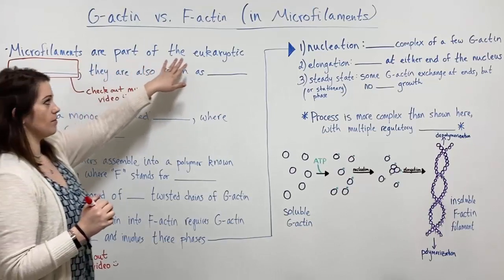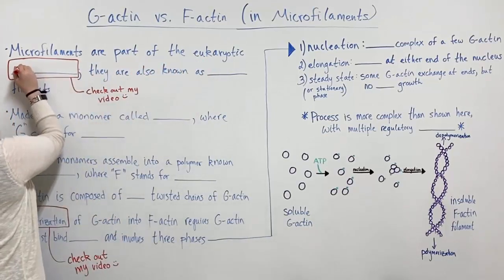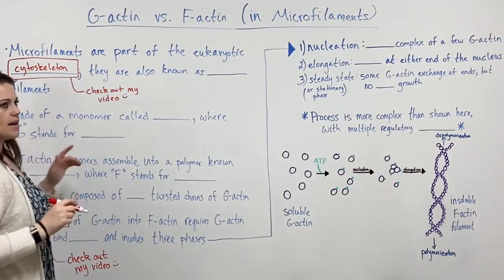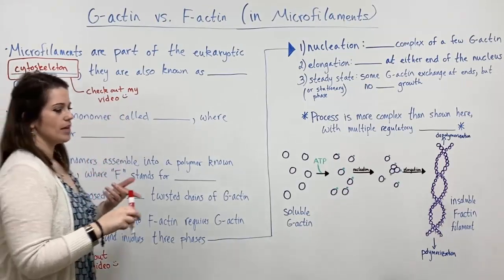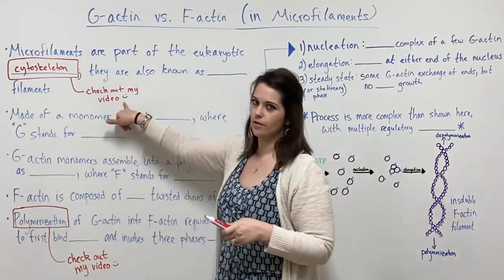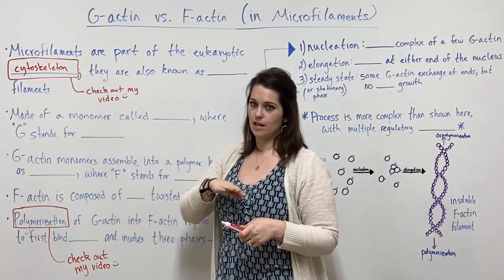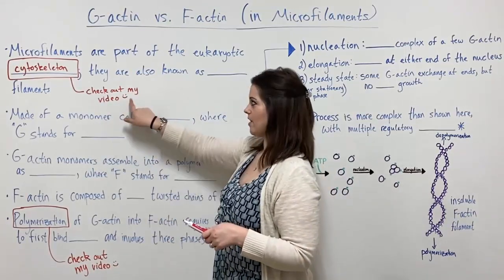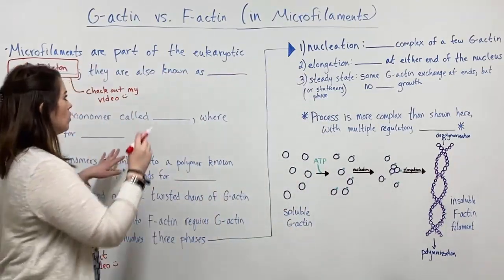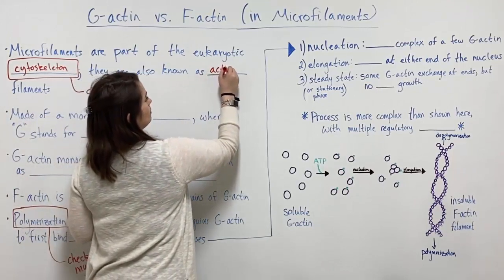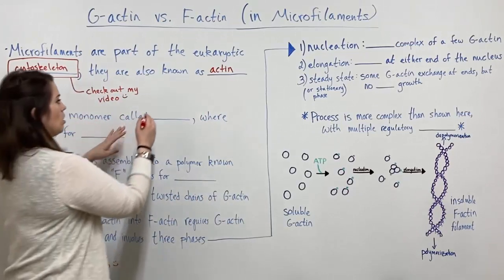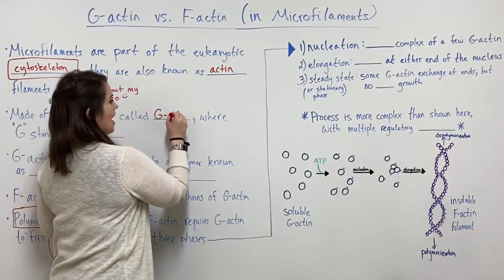Microfilaments are part of the eukaryotic cytoskeleton. Now remember that the cytoskeleton includes things like microfilaments, microtubules, and intermediate filaments. I do have another video comparing and contrasting those different elements of the cytoskeleton, so check that out if you're interested. Going back specifically to the microfilaments, these are also known as actin filaments because they are composed of a monomer called G-actin.